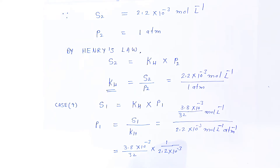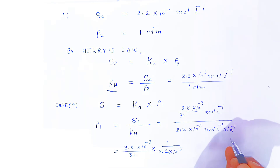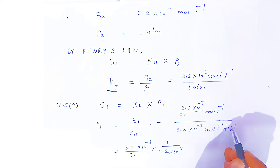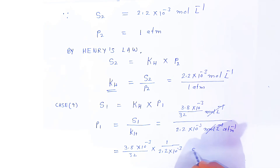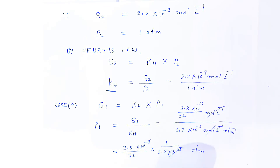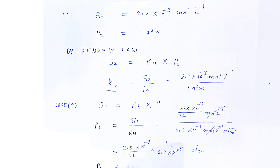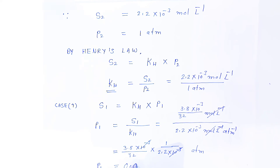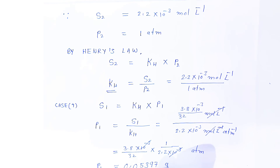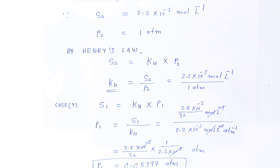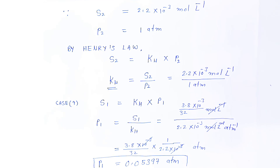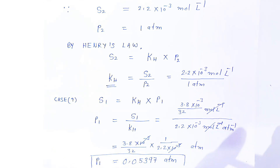When you do the calculation, the units cancel and it converts into atmosphere. The pressure P1 you will get is 0.05397 atmosphere. This is the partial pressure of oxygen needed for the survival of fish. This is very important from the examination point of view. Please like my video, share it, subscribe. Thank you very much.